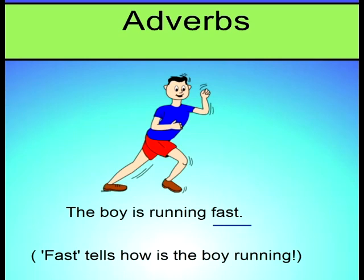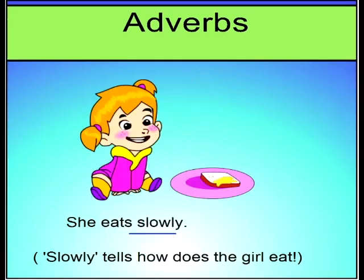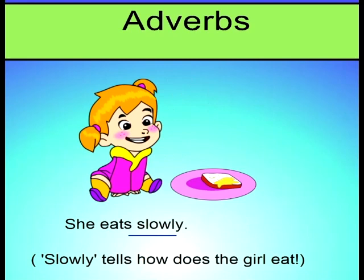For example, the boy is running fast. Fast is describing how the boy is running, or his speed. She eats slowly — slowly tells us how the girl eats, or the manner in which she eats.